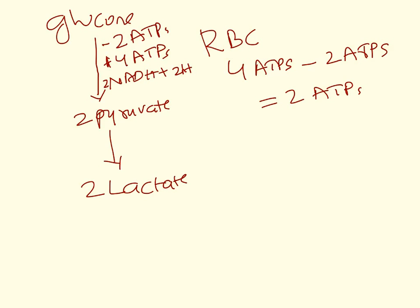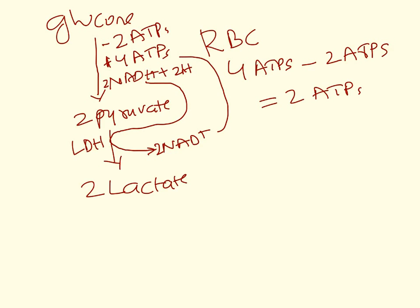Oxidative phosphorylation in red blood cells does not occur simply because red blood cells do not have mitochondria. So the 2 NADH + 2 H⁺ produced in the glyceraldehyde-3-phosphate dehydrogenase reaction will be used by lactate dehydrogenase to convert pyruvate into lactate, releasing 2 NAD⁺. These 2 NAD⁺ go back into glycolysis, allowing glycolysis to continue in red blood cells. Lactate dehydrogenase thus regenerates NAD⁺ needed by glyceraldehyde-3-phosphate dehydrogenase.